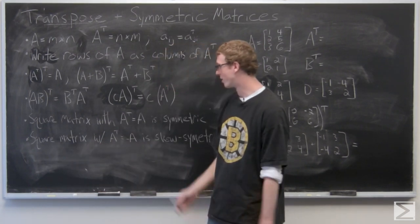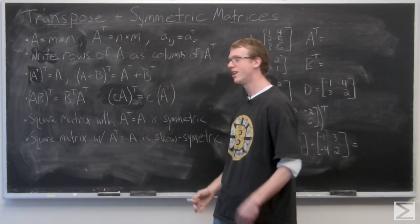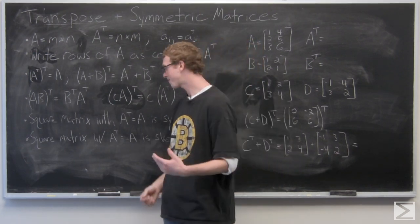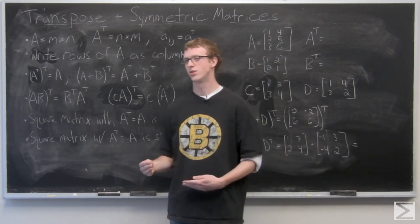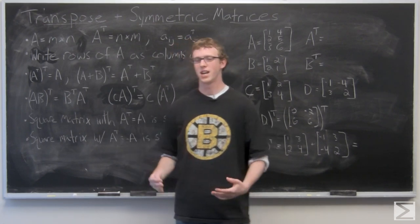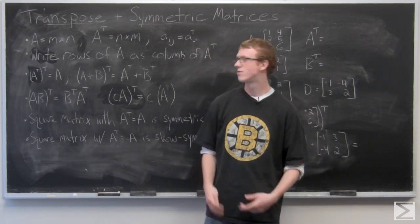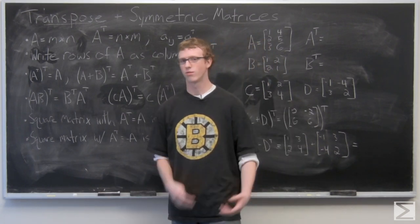And a square matrix with AT equals negative A is called skew symmetric. It's a pretty rare occurrence because if you think about a square matrix and the transpose of it, you're going to have A11, A22, A33, etc.